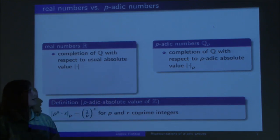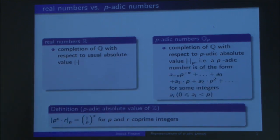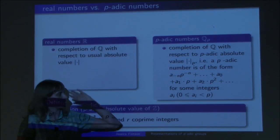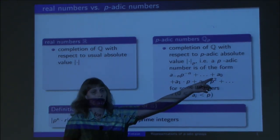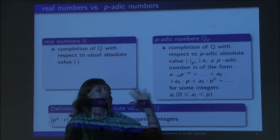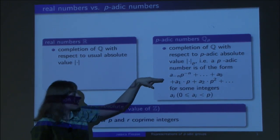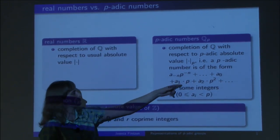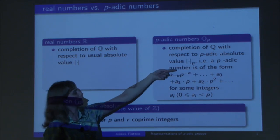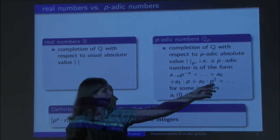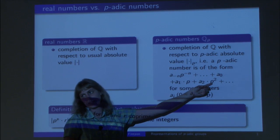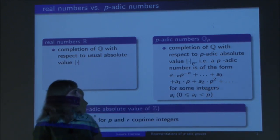A p-adic number can be written as a power series in P, starting with A_{-N} · P^{-N} and so on, going up to infinity, because if the exponent grows, the number gets very small.